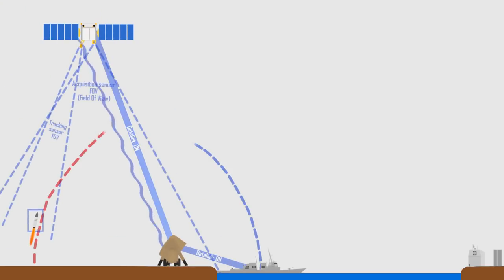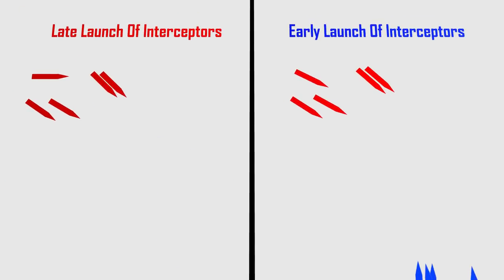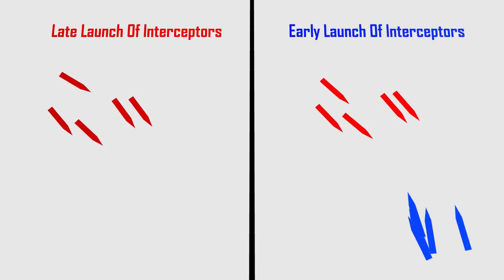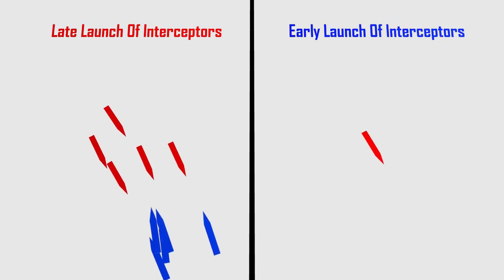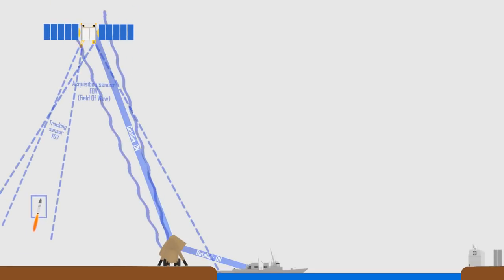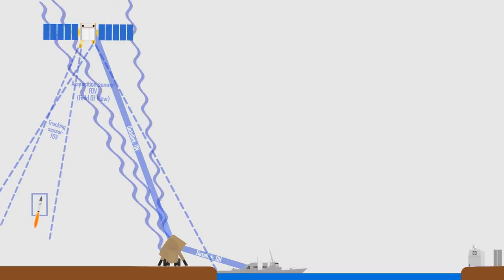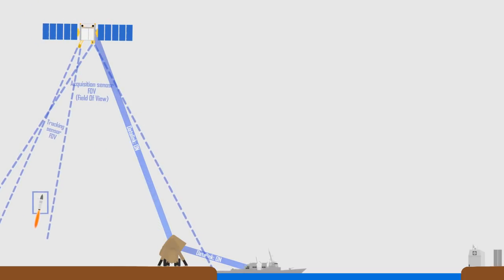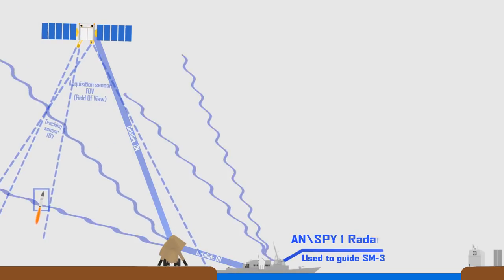An intercepting solution is calculated. The earlier the SM-3 is launched, the sooner the target will be intercepted, and thus the more likely it is that the Aegis will have an additional interception opportunity in case the first interceptor misses, significantly reducing the leakage rate. So, even though the enemy missile hasn't entered the detection envelope of the SPY-1 radar stationed on the Aegis ship, an SM-3-1B is launched.